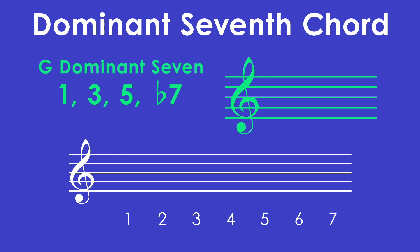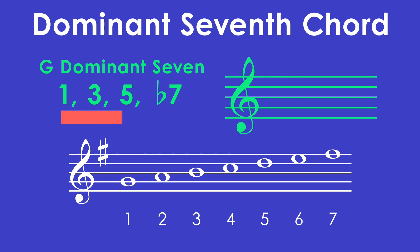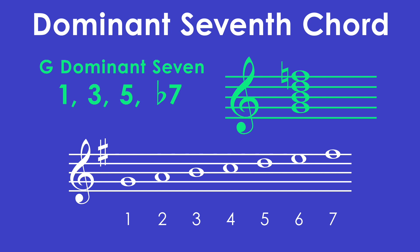Let's do another example of a dominant seventh chord — this time G7. So G is our root. This also tells us what key signature to use: the key signature of G major is one sharp, F sharp. We'll make sure we put that in the key signature. Now we can fill out the rest of the scale from G to G with our numbered scale degrees. Remember that our dominant seventh chord uses the 1, 3, 5, and flat seven of the scale. One is G natural. Three is B natural. Five is D natural. And flat seven is F natural. The normal seventh note in this scale is F sharp because of our key signature, so if we take F sharp and lower it one half step, we get F natural. So our flat seven in this chord is F natural. And that is our G7 chord.